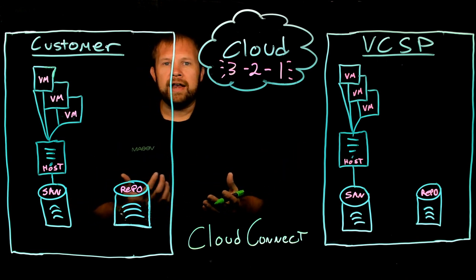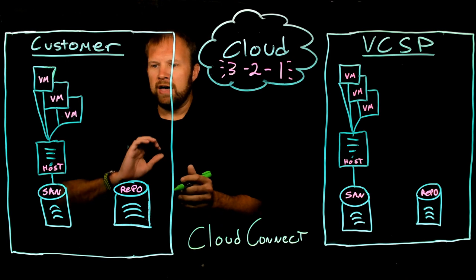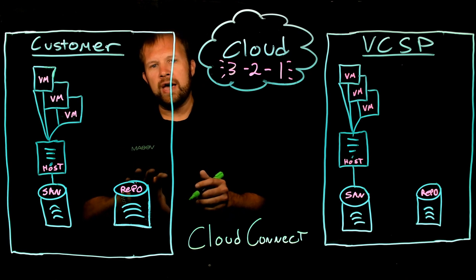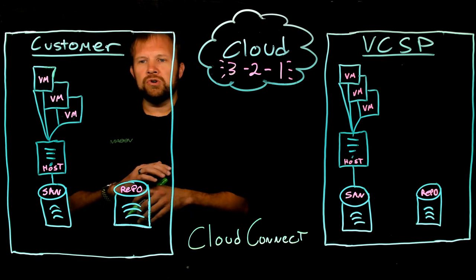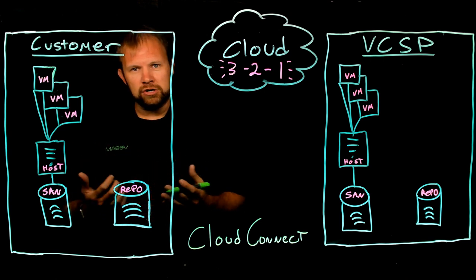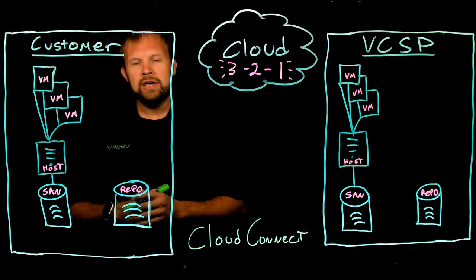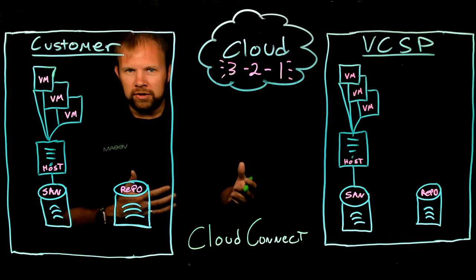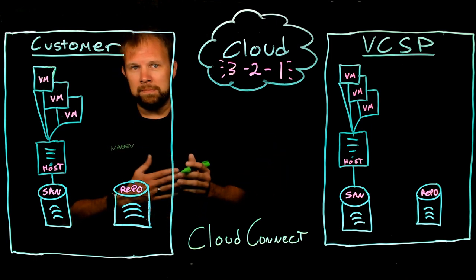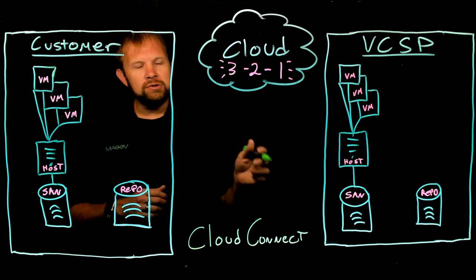What does Cloud Connect actually do? Looking at the customer environment on this side of the lightboard, we've got a basic virtualized environment with production storage, a host, and a Veeam repository. If you have backup and replication deployed, and agents protecting physical workloads, all your backups are on your on-site repository. If you had another location — a DR site or another data center — you could create a backup copy job with or without WAN acceleration to go there.